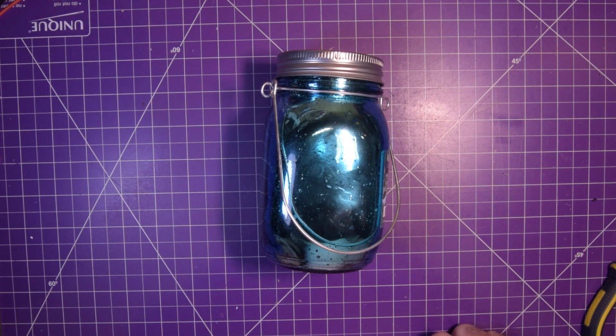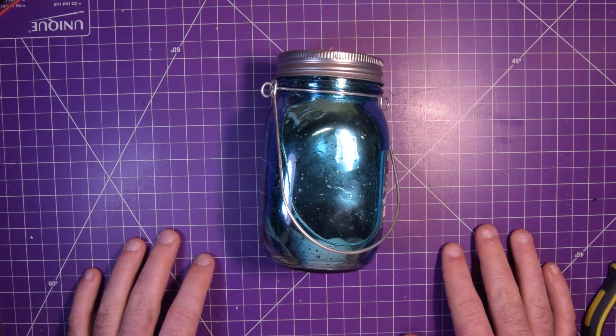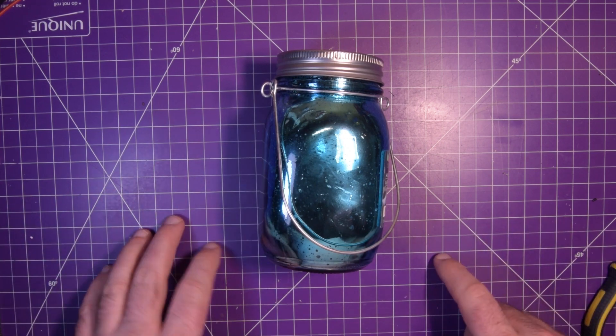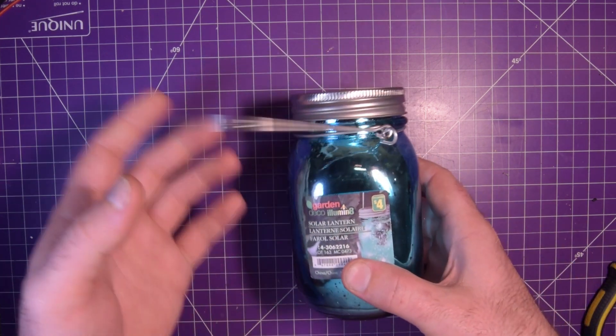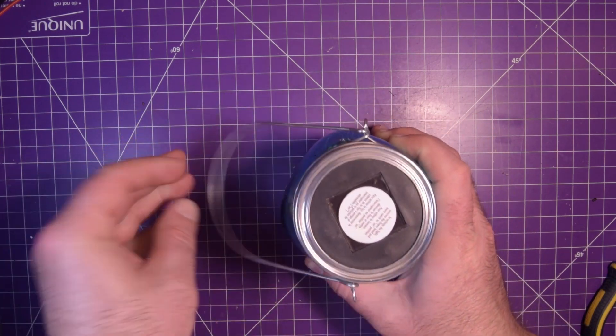Hey again and welcome back. Today I'm taking a look at a mason jar. Not just any mason jar, mind you. This is a dollar store mason jar which is also a solar lantern.